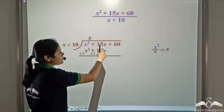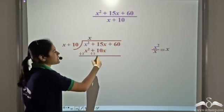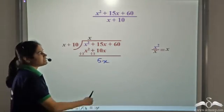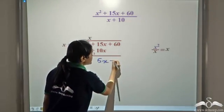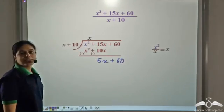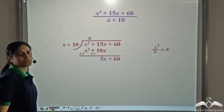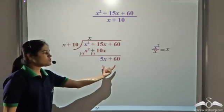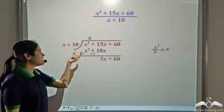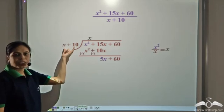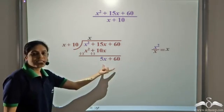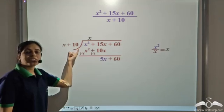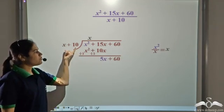We bring down the 60, giving us 5x plus 60. Now we need to divide 5x plus 60 by x plus 10. We repeat the same process: take the first term of 5x plus 60 and the first term of the divisor.